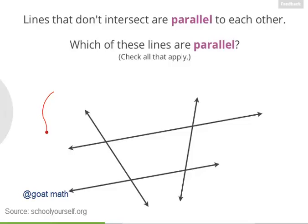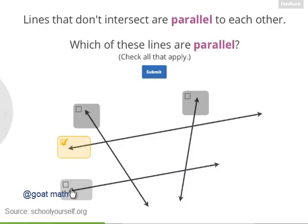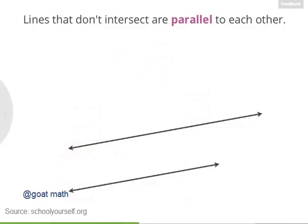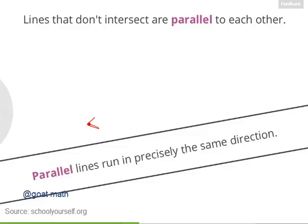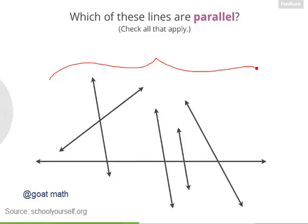Now lines that don't intersect are said to be parallel to each other. So take a look at these four lines down here. Which two of them are parallel to each other? In other words, which two lines don't intersect? Nicely done. So these two lines are parallel. No matter how much you extend them, they'll never intersect. Another way to think of parallel lines is that they run in precisely the same direction. Next, take a look at these lines here. Which of these are parallel to each other? Here's a hint, there are three of them that are all parallel to one another.